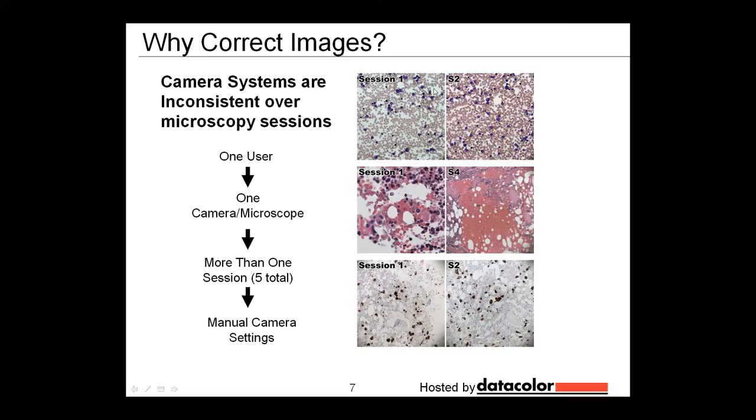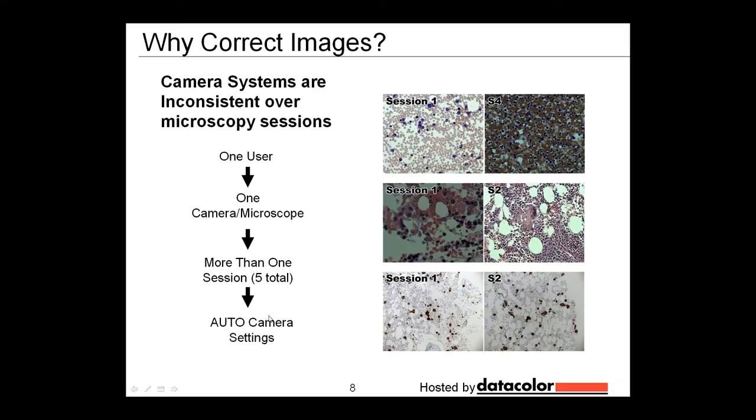So if you look at the top row, you can see that there's a difference between session one and session two. You can see immediately that session one has a little bit different colored background than session two. And in both instances, I set the white balance, but it turns out that in one instance, it white balanced fairly well, and in the other it didn't. In the second row, you can see that session one shows red blood cells that are a little bit redder than they do in session four. And in the bottom row, you can see pretty clearly that there's a white balance difference between session one and session two, that session one has an off-colored background.